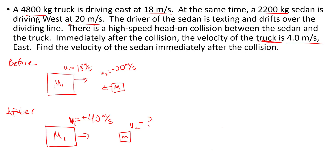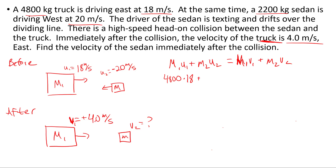We can set up conservation of momentum since we know all the masses and all the velocities. The equation is: M1·U1 + M2·U2 = M1·V1 + M2·V2. Plugging in numbers — omitting units for now — 4800 times 18 plus 2200 times negative 20 equals 4800 times 4 plus 2200 times V2.